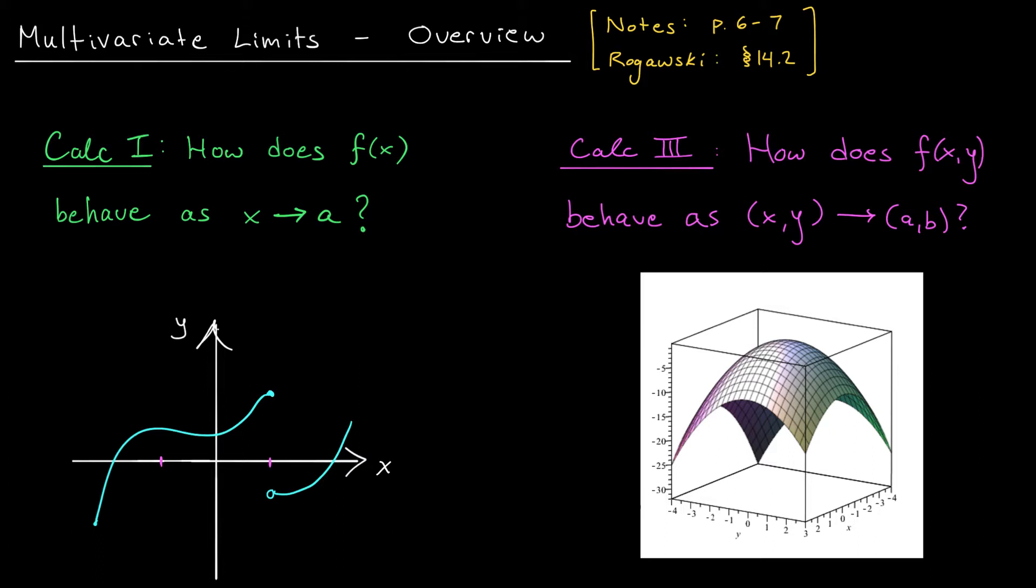For example, consider the function that I've graphed down here below. Suppose that our a value is this point here on the left. The question is, what does our function do as x gets close to a? Well, there are a couple different ways that we can get close to a. We could come in from the left, and it appears that when we come in from the left-hand side, our y value is approaching some value up here. Maybe we'll call it L.